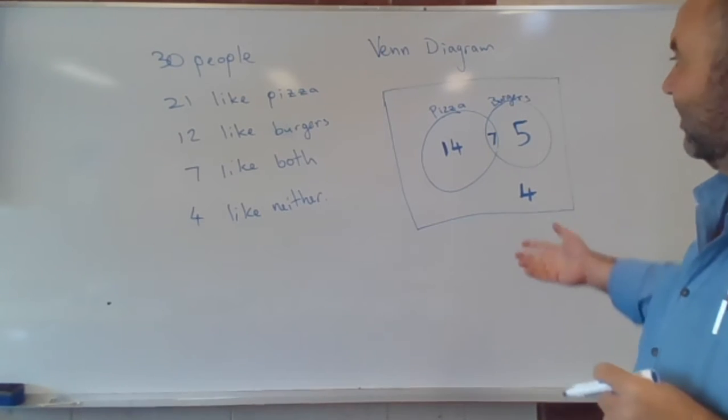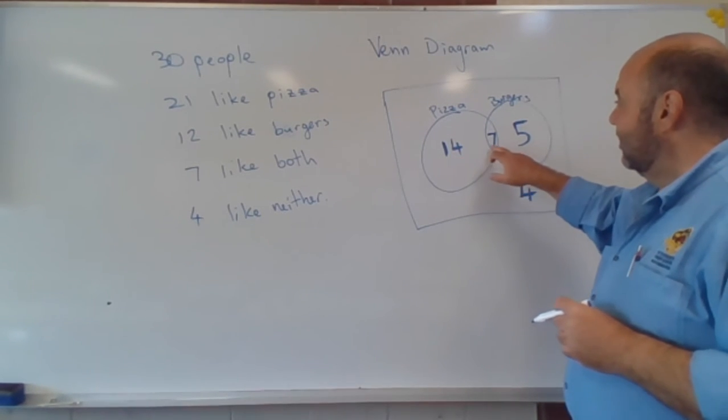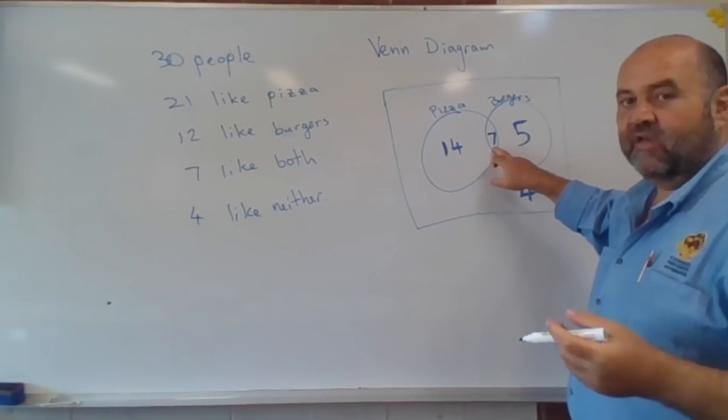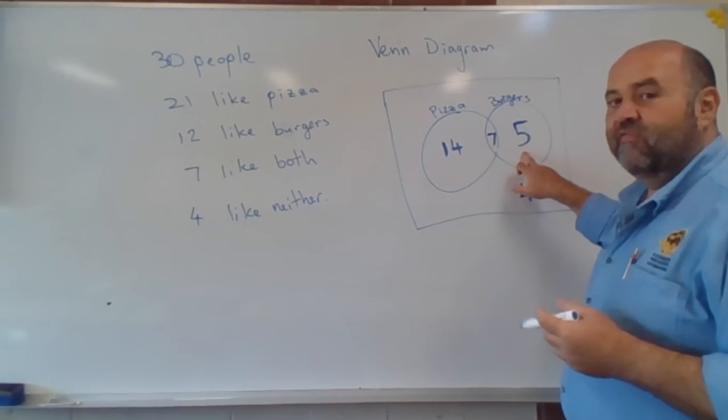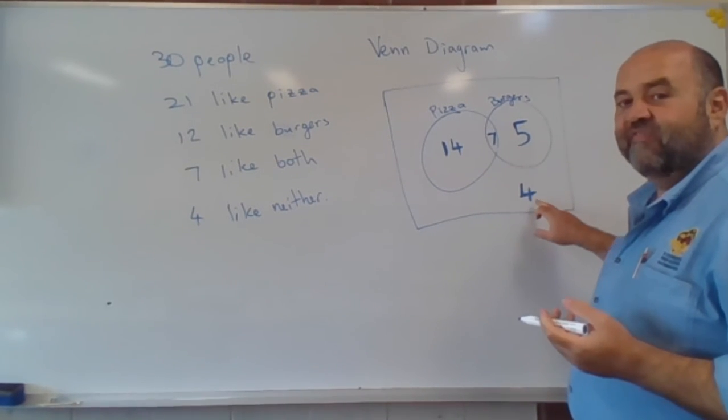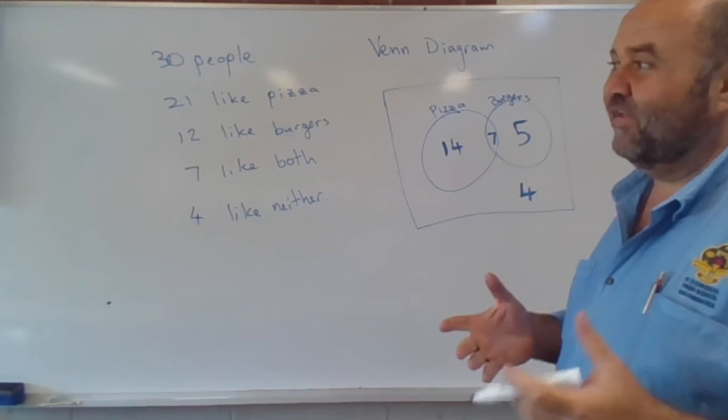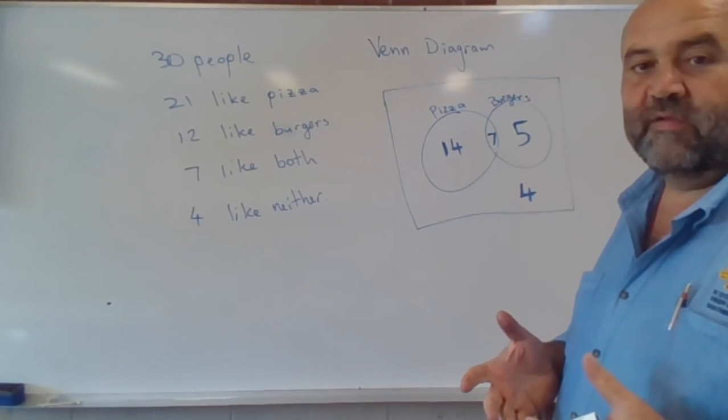Now, what do all these numbers add up to? 14 plus 7 is 21, plus 5 is 26, plus 4 is 30. We've got all of the people all there together.